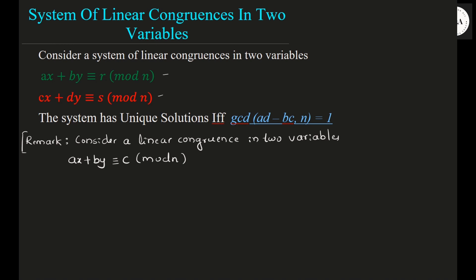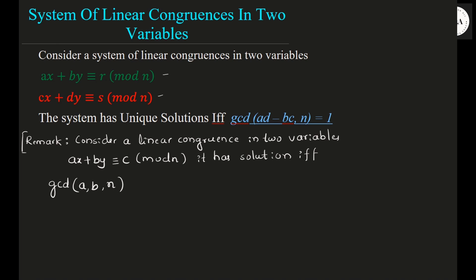According to this, Ax plus By congruent to C mod n, it has a solution if and only if gcd of a, b, n is divisible by c. This is for a single equation — gcd of a, b, and n divisible by c, then you call it a solution.